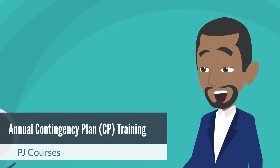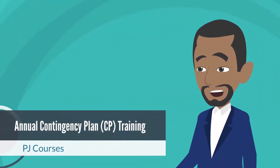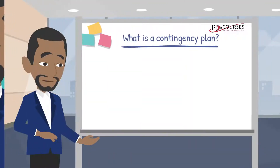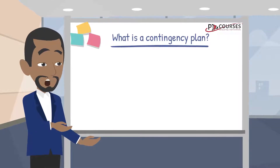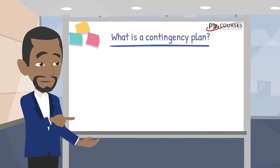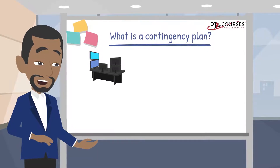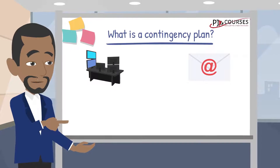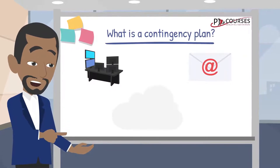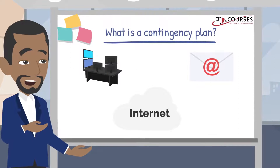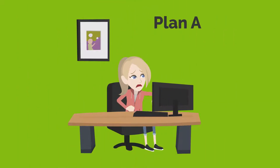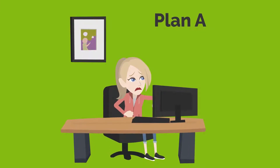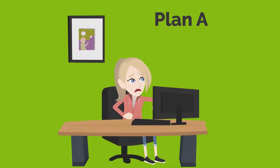Hello and welcome to PJ Courses annual contingency plan training. So what is a contingency plan? Before I get into that, I want to start by asking you the following questions. Does your organization have critical functions that rely on information technology? For example, does your organization require email services? Does it require access to the internet? And as an employee, are you able to do your job without a computer? If you answered no to any of these questions, then your organization should have a plan of action in place in case critical network services become unavailable.